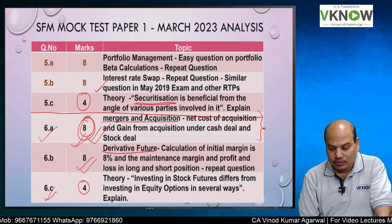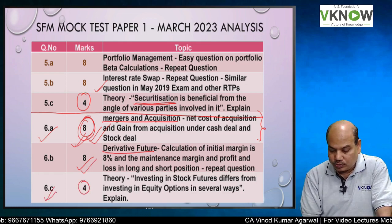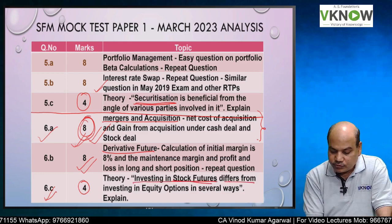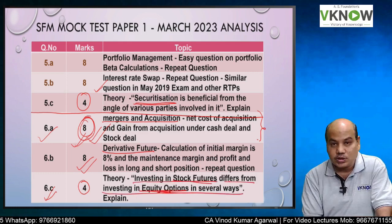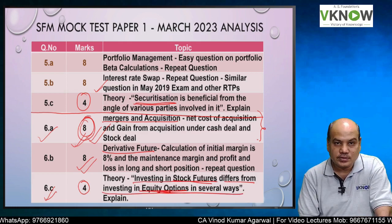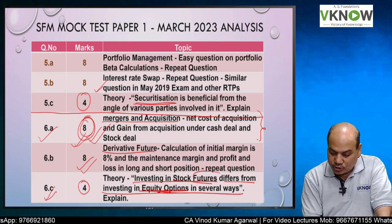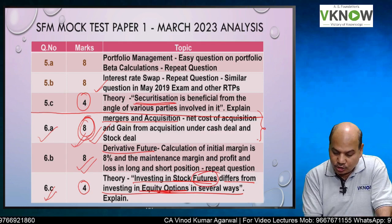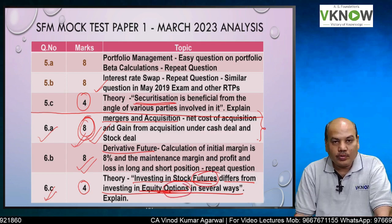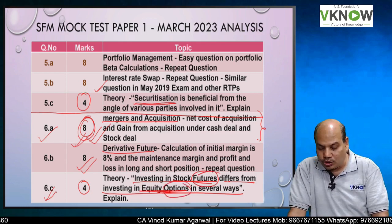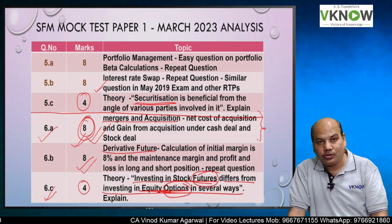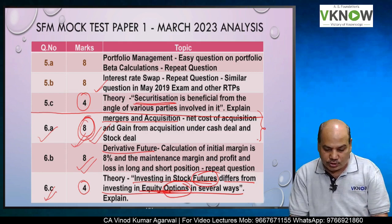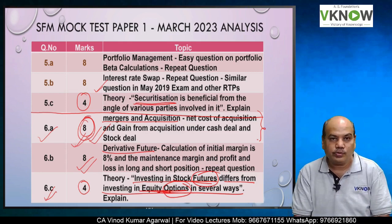Question 6C was for 4 marks — a theory question: investing in stock futures differs from investing in equity options in several ways. In futures you have a right and obligation, whereas in options the holder has the right but not the obligation. So for the option holder there is limited risk in case of equity options. That is what you have to write.